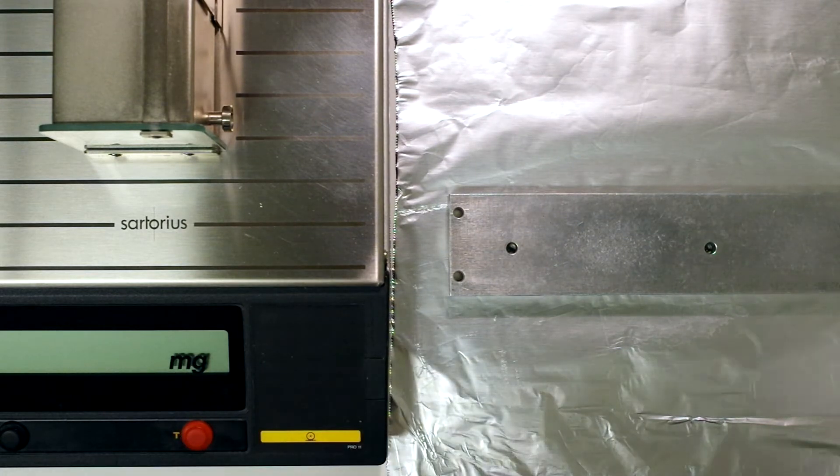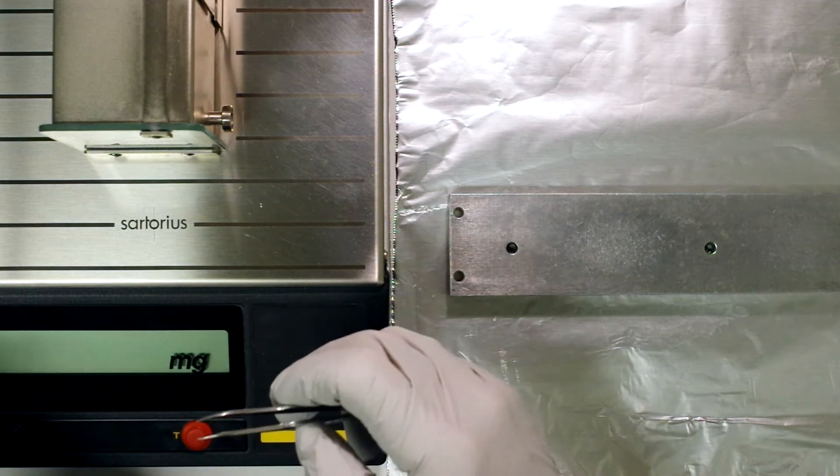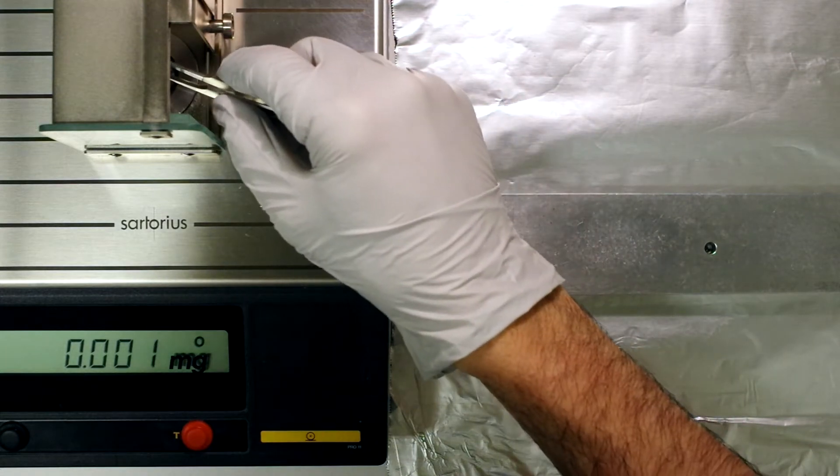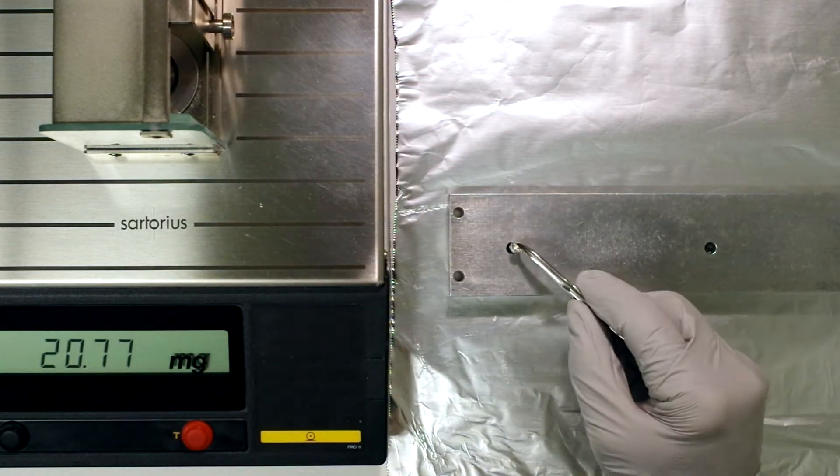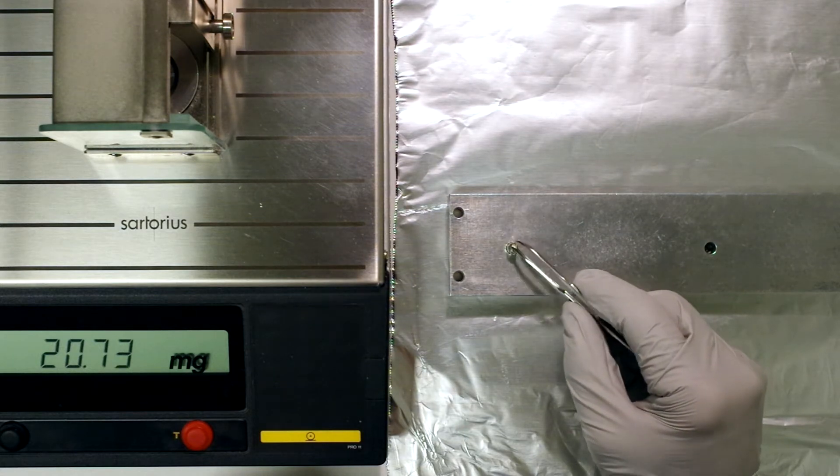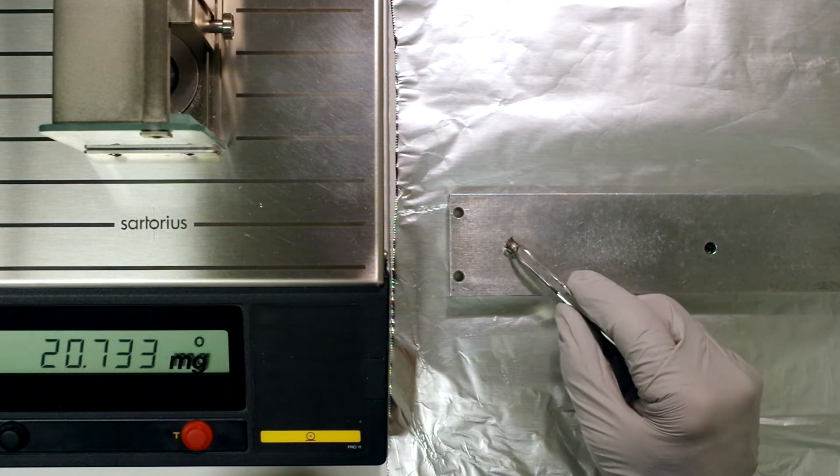And then I'm going to use our soil standard, which has about 2% carbon, so it's fairly low density. Higher density materials should pack in easier. But in this case, I'm going to try to get a minimum of 75 milligrams into the capsule.